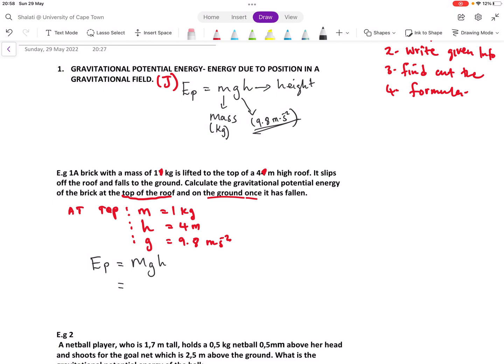Our mass, we said it's one kilogram, and our g is 9.8 and our height is four meters. So it's just a matter of putting this in your calculator, and I find that it's 39.2 joules. That is the gravitational potential energy at the top.